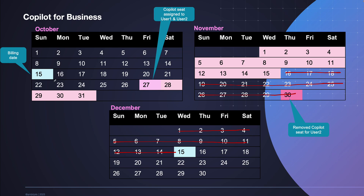So if you're adding a person in the middle of a billing month, you only pay from the date they were added. But if you're removing someone in the middle, the seat is only removed in the next billing cycle and you still pay through the end of that month. For seat management, if you're planning to remove and reassign, plan it around the billing date — maybe on the 14th take a decision on how many people need a seat for the next month, then act on it. This ensures better cost control.